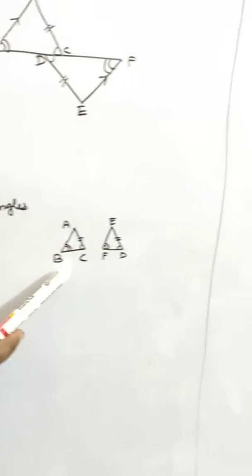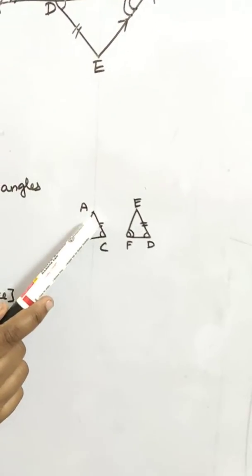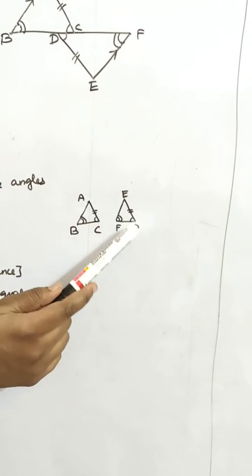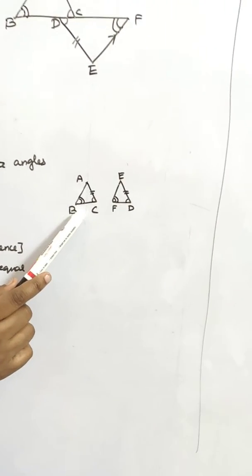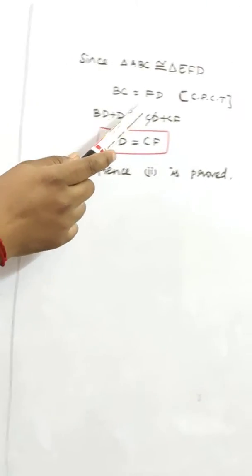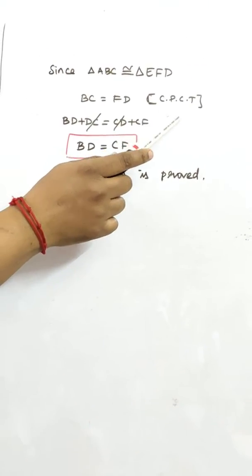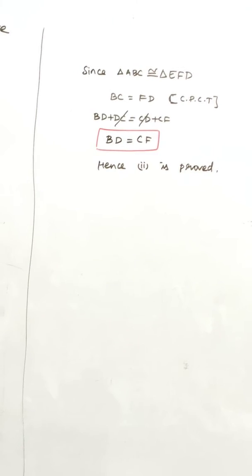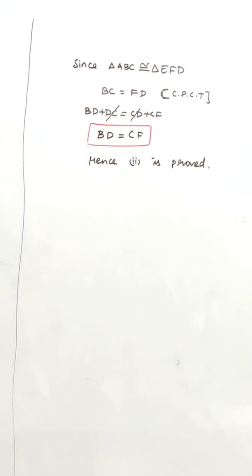Next, corresponding side BC equal to FD. AC equal to ED is given, so remaining corresponding sides BC equal to FD by corresponding parts of congruent triangles are equal.